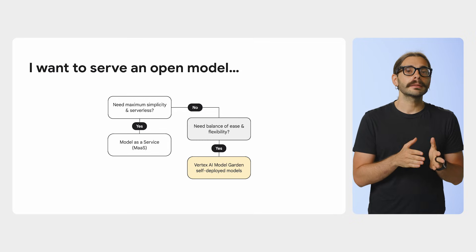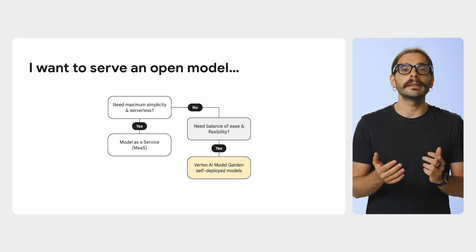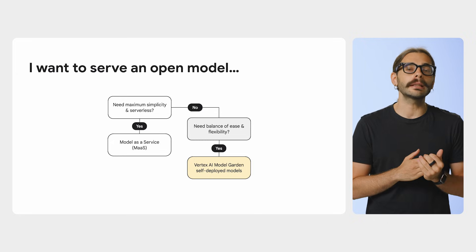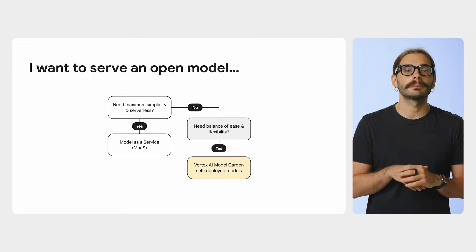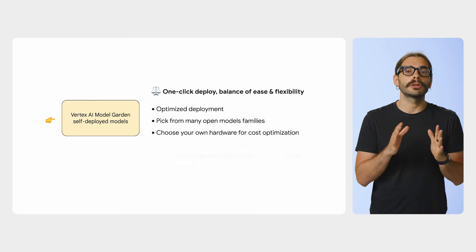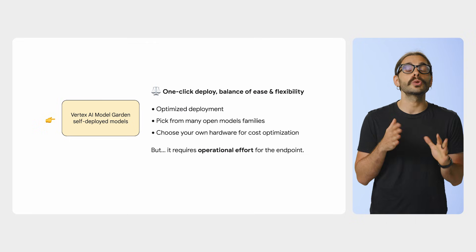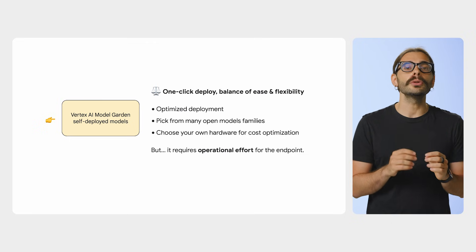What if MaaS is a bit too restrictive? You want a balance between ease of use and flexibility — the single-click deployment path is your sweet spot. With ModelGarden's self-deploy models, you can choose from a huge list of curated open models, and the key difference is that you choose the hardware. This gives you direct control over performance and cost, and we will dedicate a future episode to showing you exactly how to configure and deploy these models.